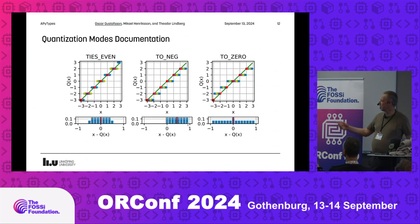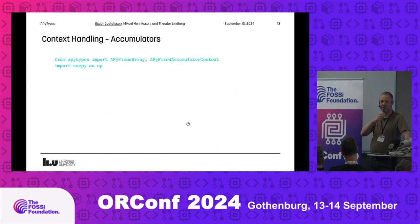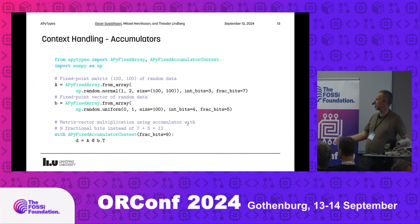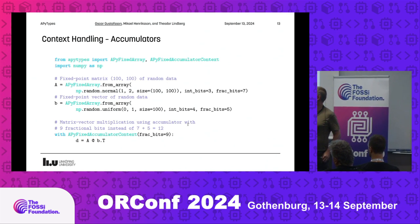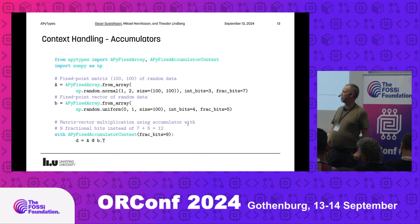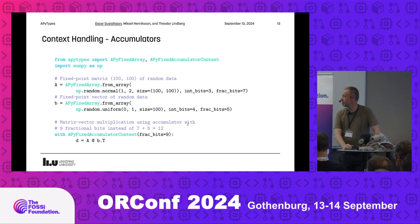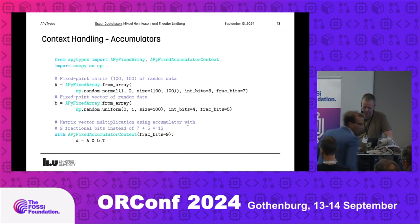These are like three of the 15 quantization modes, with error distributions shown. We also have a similar control for fixed-point accumulators: during matrix multiplication we would use full precision, but in hardware we might want to quantize before accumulating. We can model that — for example, an accumulator that would normally have twelve fraction bits can be controlled to quantize before accumulating, allowing us to accurately mimic hardware behavior.